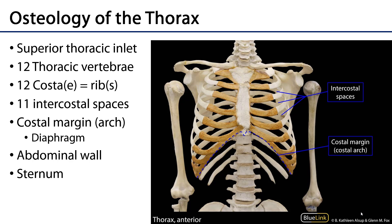Let's start with the bones. The thorax is probably best conceptualized as a bony cage. There are 12 thoracic vertebrae from T1 to T12, and each of these vertebrae is associated with a pair of ribs or costi. Ten of the 12 ribs are going to connect along the medial border to a sternum via costal cartilages. This is hyaline cartilage.